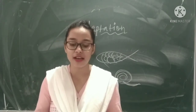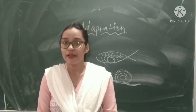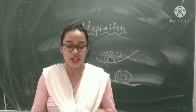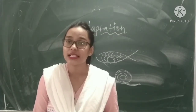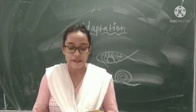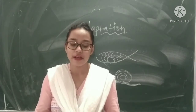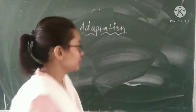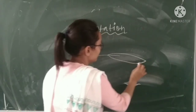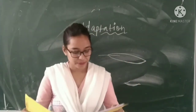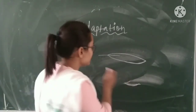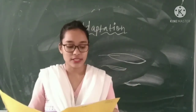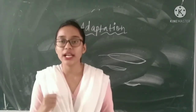Feathers: the body of birds is covered with feathers. Birds have three types of feathers. Flying feathers are present on the wings and help the bird to fly — they are quite bigger in size. Body feathers are medium-sized and cover the body — they are very soft. Down feathers are the softest and keep the body warm.